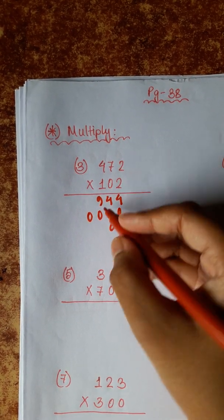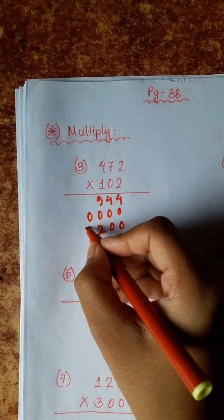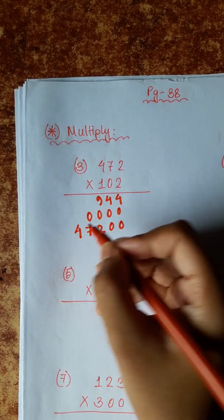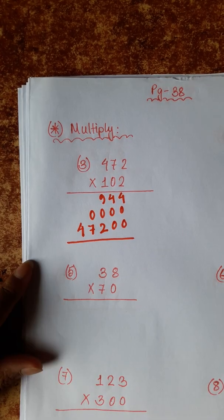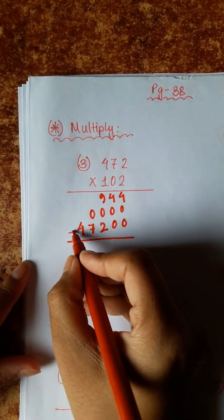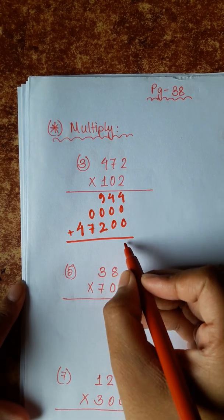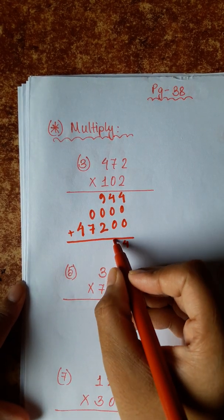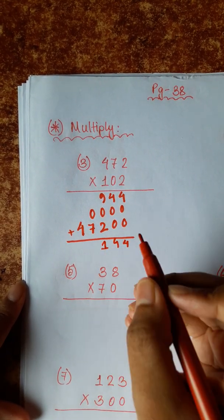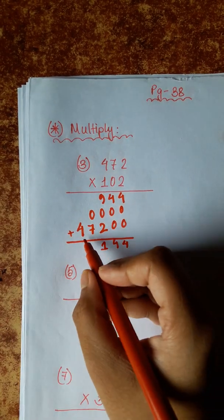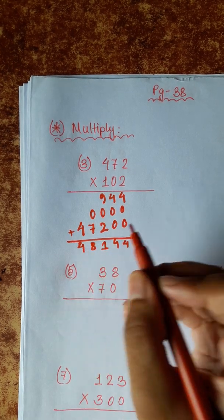2 ones are 2, 7 ones are 7, 4 ones are 4. So: 4, 4, carry 1, 7, 1, 1, 8, 4.